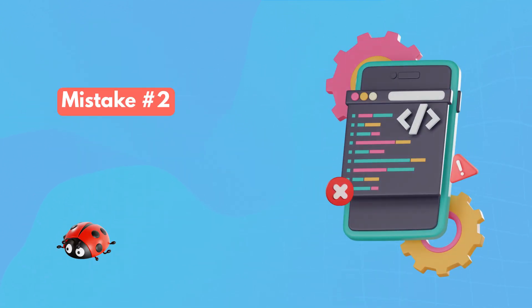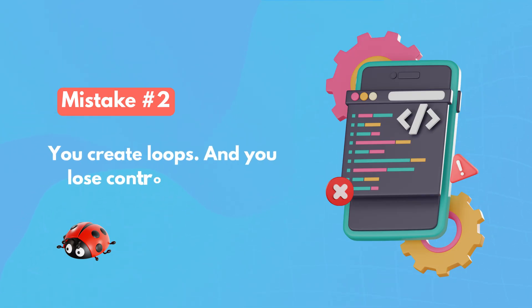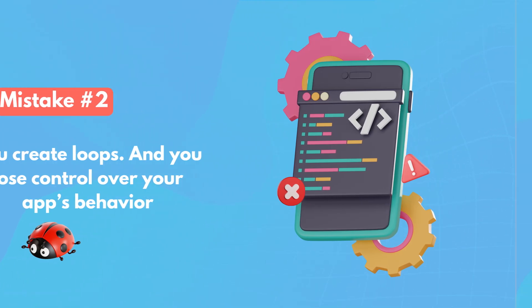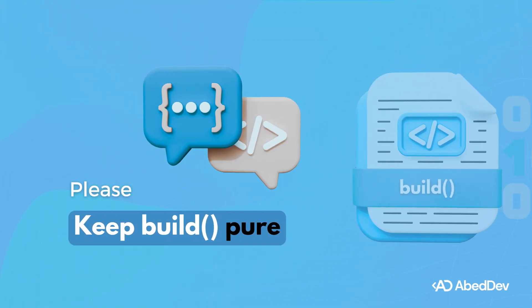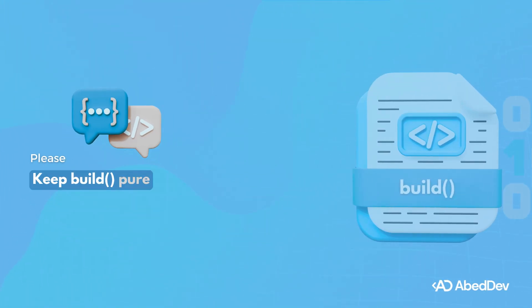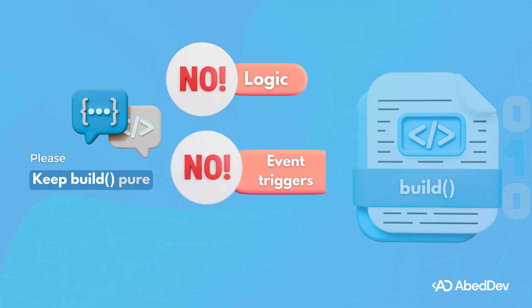If you trigger side effects in the build method, you break separation of concerns, create loops, and lose control over your app's behavior. Keep your build method pure — no logic, no event triggers, just layout.